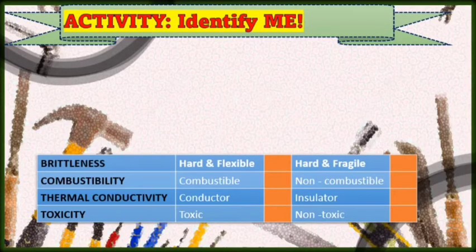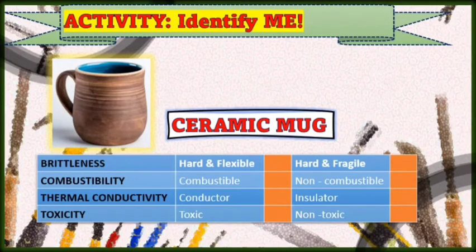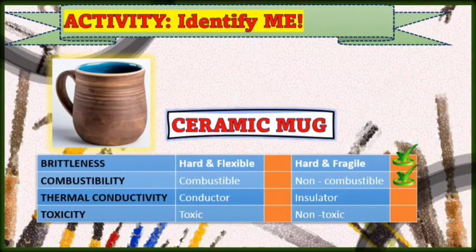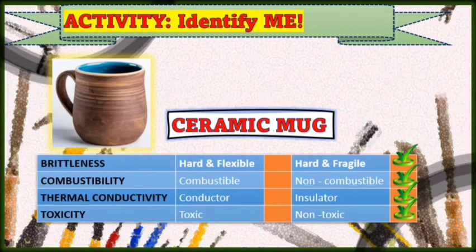Number one object is a ceramic mug. In terms of brittleness, is it hard and flexible or hard and fragile? Yes, it is hard and fragile. How about combustibility? Is it combustible or non-combustible? Yes, it is non-combustible because it does not easily burn. How about thermal conductivity? Is the mug a conductor or an insulator? Yes, it is an insulator. How about toxicity? Is it toxic or non-toxic? Yes, that is non-toxic because we use ceramic mugs when we sip coffee.